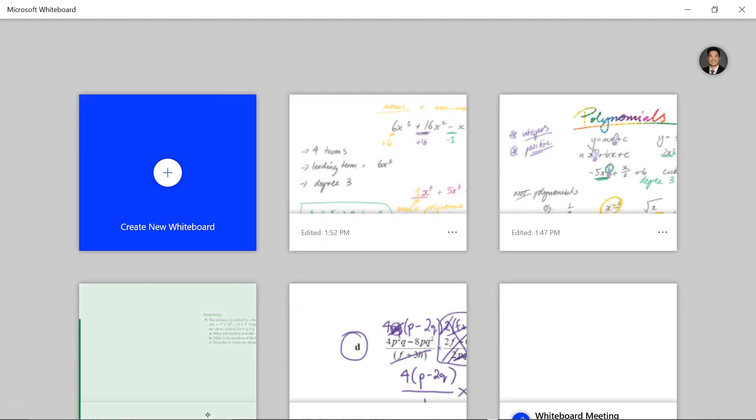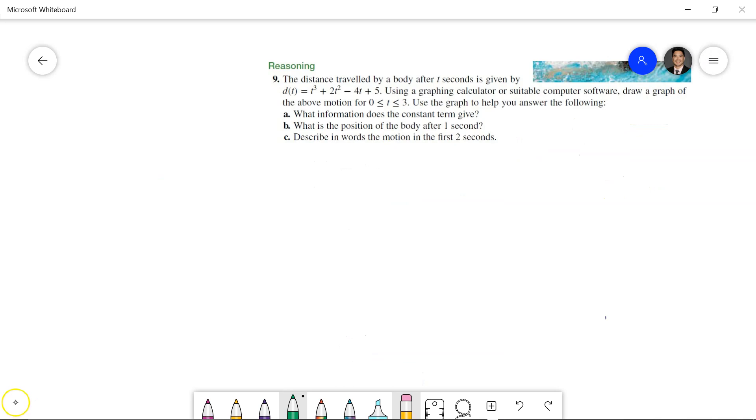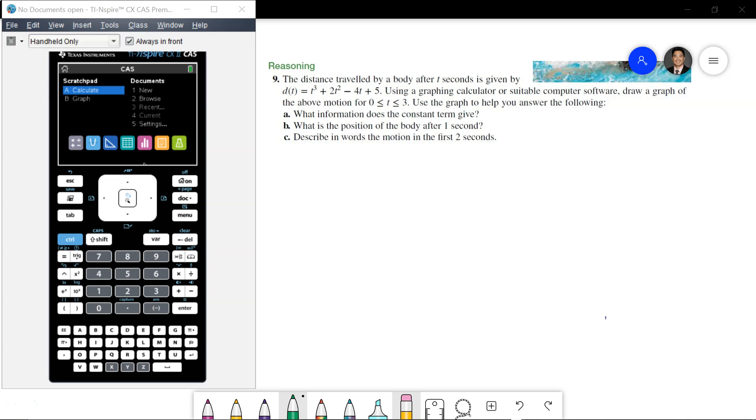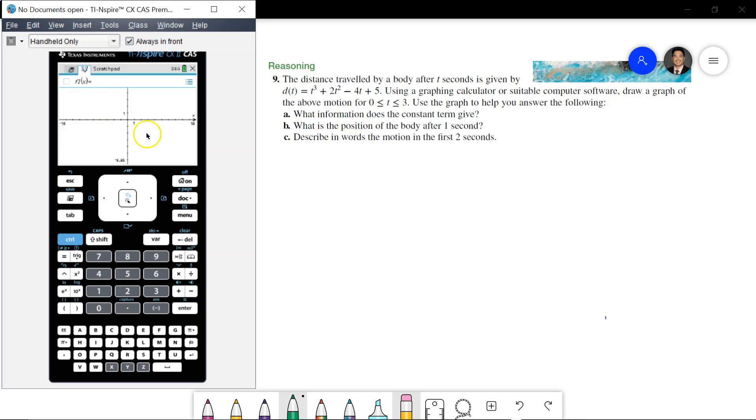Let's move on to this example, where I'll use the calculator as well. We've got the distance travelled by a body after t seconds is given by that expression here. Using a graphics calculator or suitable computer software, draw a graph. We're not expecting you to know how to graph this at the moment, so we're using our calculators for this. We'll go to a calculator, hit graph. And in this case, we're going to replace t with x. So, x to the power of 3, plus 2x squared, minus 4x, and plus 5. And we get this immediately.